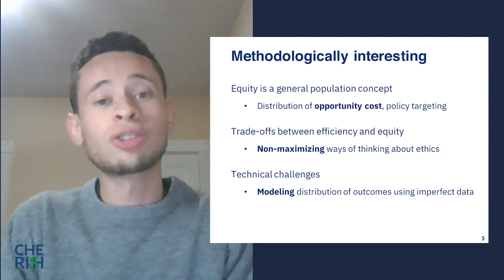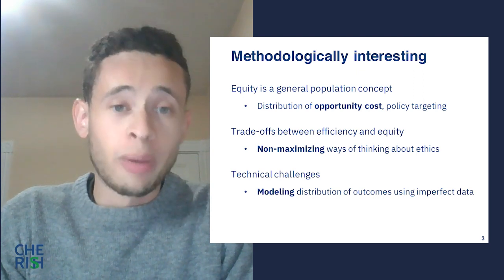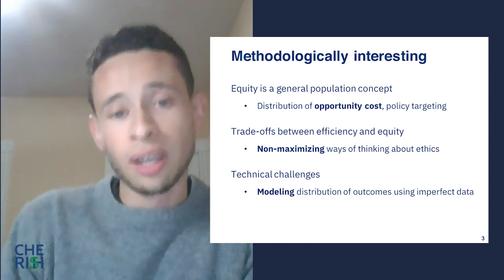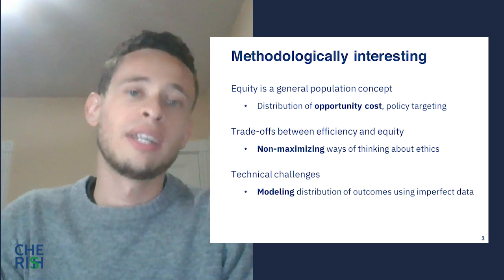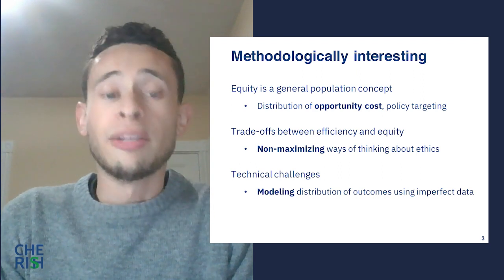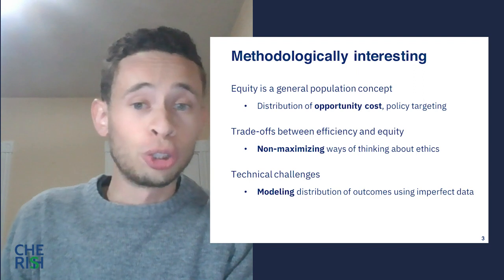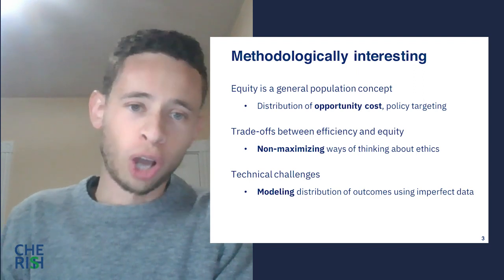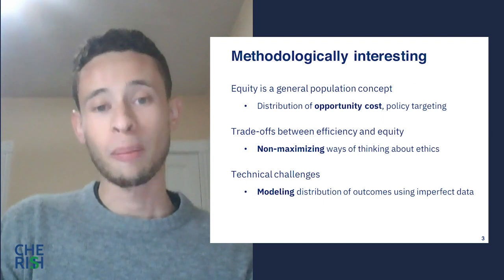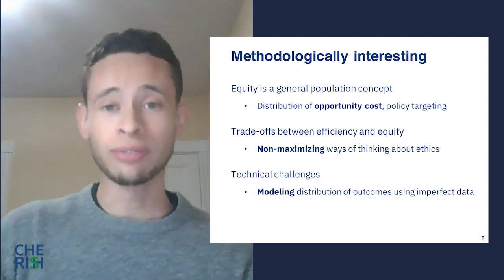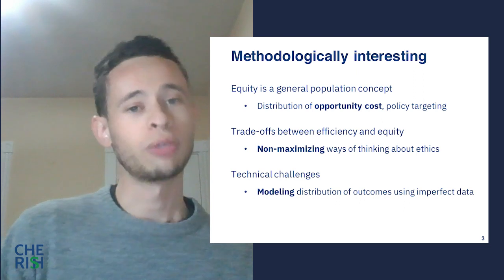Secondly, DCEA addresses interesting ethical issues and concepts. It is a rich method for investigating social value judgments about equity and efficiency, about how these objectives conflict, and about how trade-offs between equity and efficiency can be resolved in ways that do not necessarily fully maximize either objective. Finally, many technical challenges remain to explicitly modeling real-world complexities, especially with imperfect data, in order to produce accurate and credible simulations of distributional consequences. Because DCEA is still quite a recent approach, the methods will require ongoing development and improvements in the years to come.